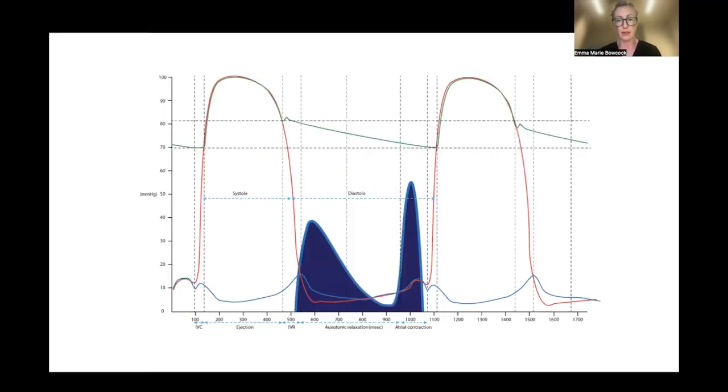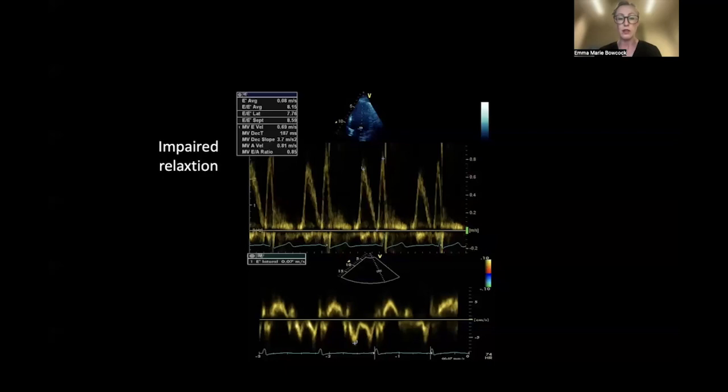This is a classic example of impaired relaxation: shorter E-velocity, slightly longer decel time not quite 200 but getting there, and our A-wave is bigger than our E-wave. With our E-prime values, that myocardial velocity, they're often maybe a little bit reduced but not very low like you find in the more restrictive phenotypes.